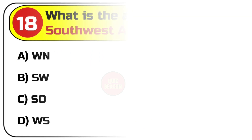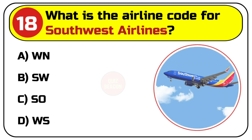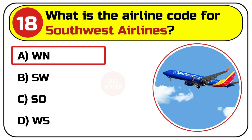Question number eighteen: what is the airline code for Southwest Airlines? Options are A. WN, B. SW, C. SO, D. WS. Correct answer is A. WN.